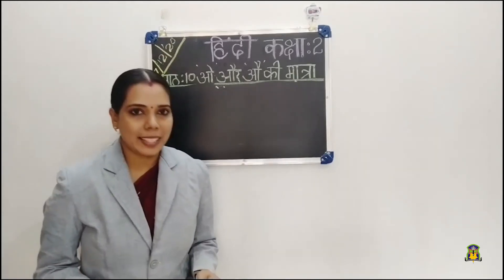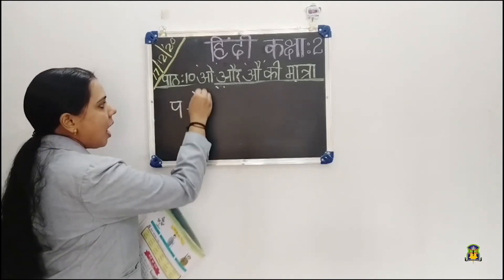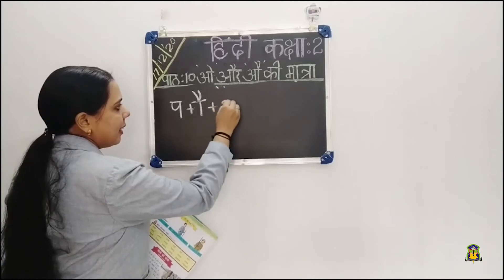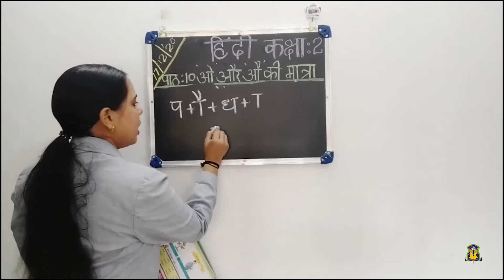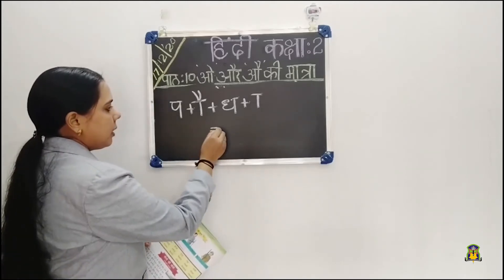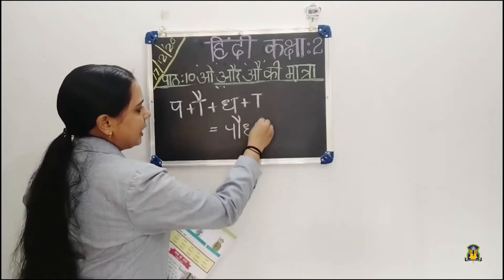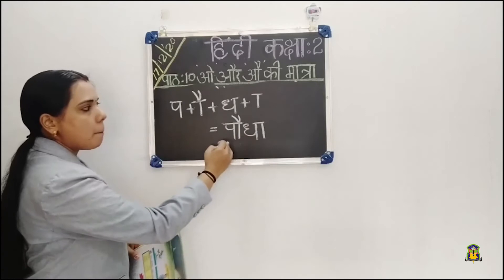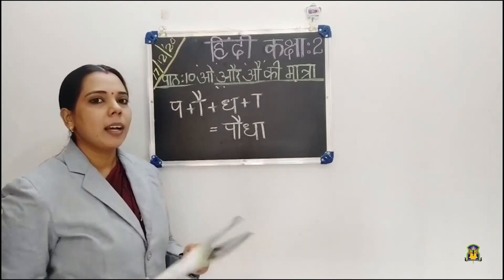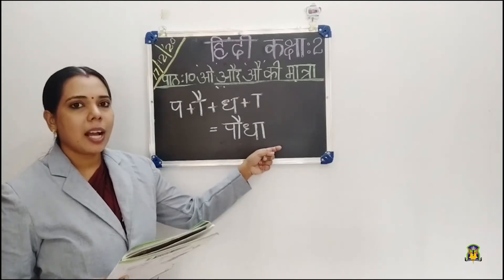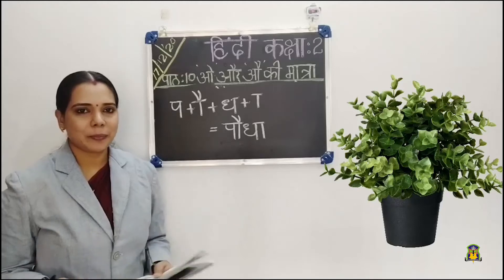Our first example: pa plus au matra, da plus au matra. Join the letters together and we get the word pauda. Pa plus au matra gives paw — pauda. Pauda means plant.